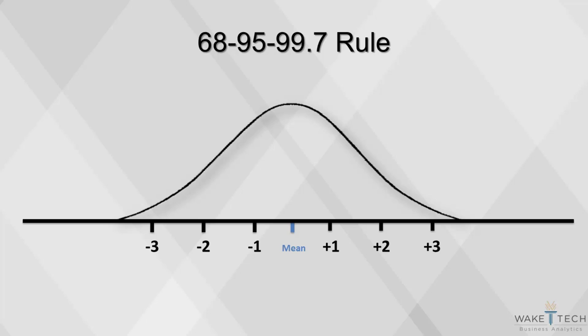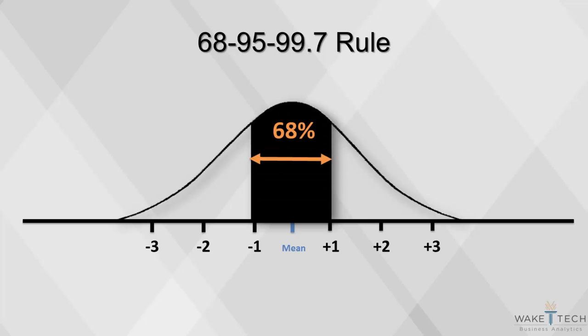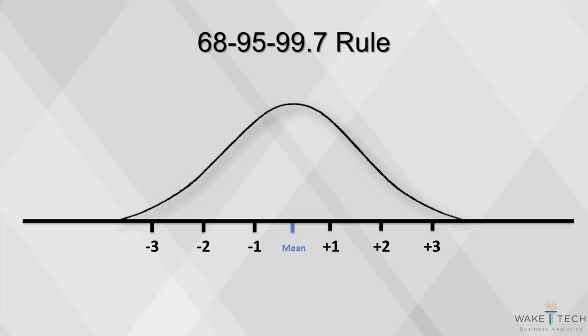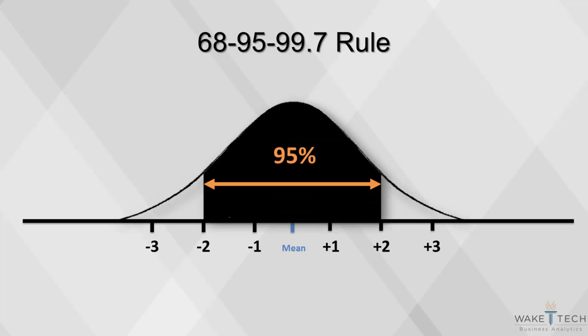The beauty of the normal curve is that no matter what its mean and standard deviation are, the area between the mean minus 1 standard deviation and the mean plus 1 standard deviation is always about 68%. The area between the mean minus 2 standard deviations and the mean plus 2 standard deviations is always about 95%.